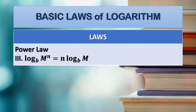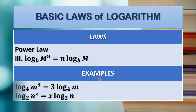The last law of logarithm: the power law. The log of m raised to n with base b is equal to n times the log of m with base b. The exponent is transferred before the logarithmic expression and multiplied to it. Example: log of m raised to 3 with base 4 is equal to 3 times the log of m with base 4. Next: log of n raised to x with base 2 is equal to x times the log of n with base 2.